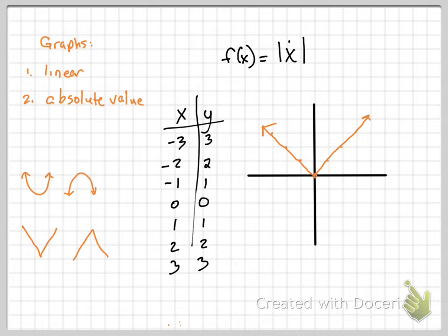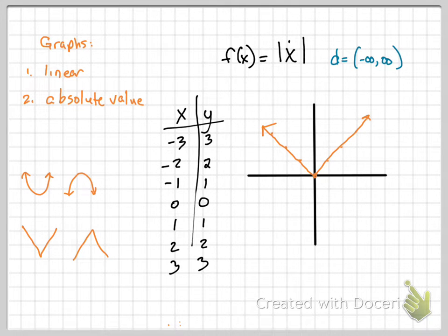Now write down the domain and range of this graph. You can use interval notation. Domain: negative infinity to positive infinity — does it keep going left and right forever? Are there any gaps along the x-axis? No. What is the range? From zero to infinity, including zero.